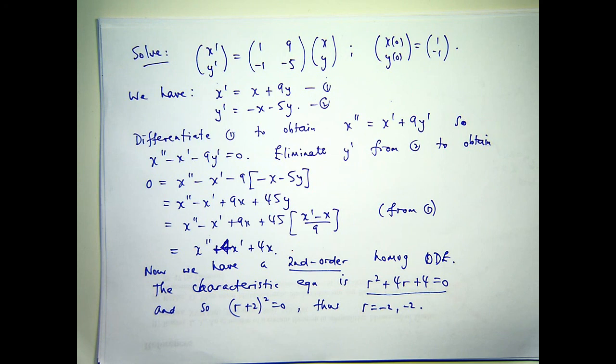So we know when we have repeated roots, the solution to my second-order problem is just a linear combination of exponential and the independent variable times an exponential. So e to the minus 2t and t times e to the minus 2t for this problem.